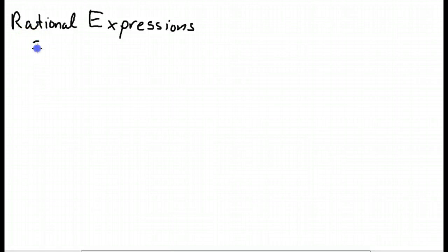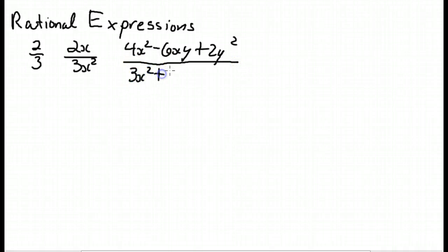So it can be anything from simply two-thirds. Each of those is a polynomial. It could be 2x over 3x squared. And it could be 4x squared minus 6xy plus 2y squared over 3x squared plus 7xy minus y squared. All of those are rational expressions.